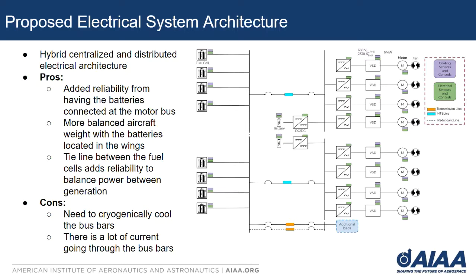The advantages of this specific architecture include the added reliability of having the batteries connected to the motor bus if anything happens to the fuel cell or HTS line, as well as more balanced aircraft weight with the batteries located in the wings. An interesting challenge is that we will need to cryogenically cool the bus bars. The motors will pull a lot of current and we're only using one HTS line to provide power to each of the wings, so we can't use the standard copper bus bar — it would draw a lot of heat, so we need to cryogenically cool the bus bars to stay stable.